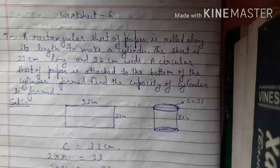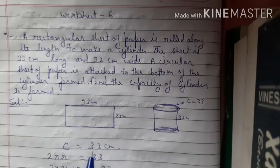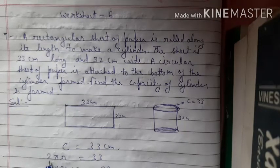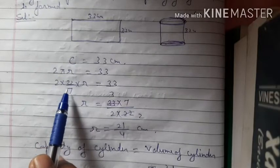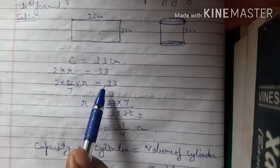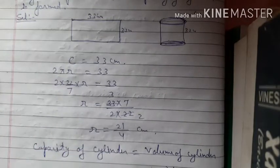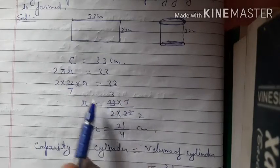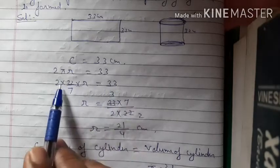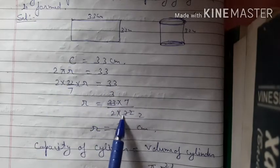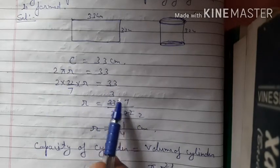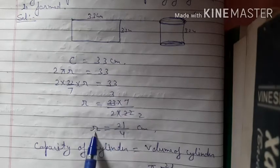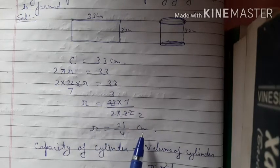The circumference is 33 cm. We know the formula: circumference = 2πr. So 2πr = 33. Substituting, 2 × (22/7) × r = 33. Therefore r = (33 × 7) / (2 × 22). Simplifying: 7 goes up, and cancelling 11 from numerator and denominator, r = 21/4 cm.